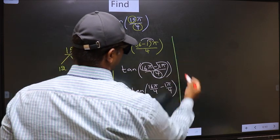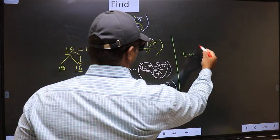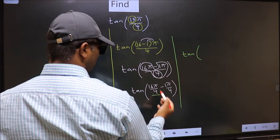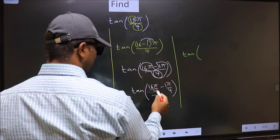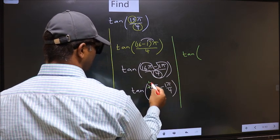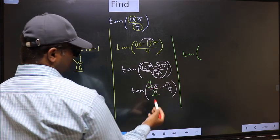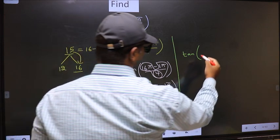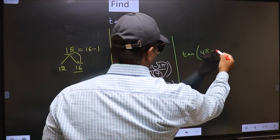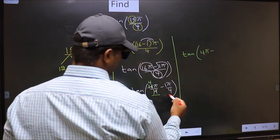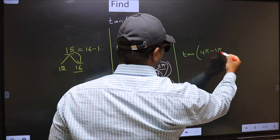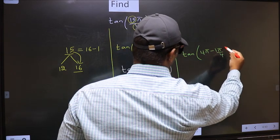Now here you should cancel — 4 into 16 gives 4. So we get tan(4π minus π/4).